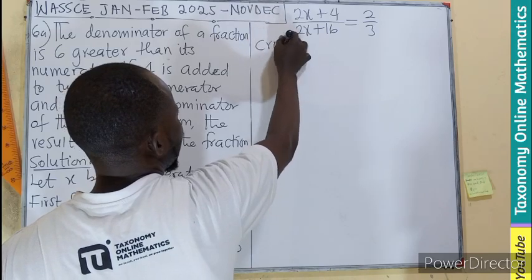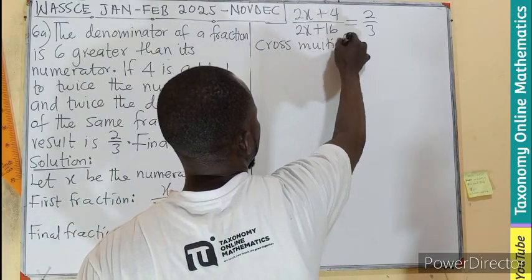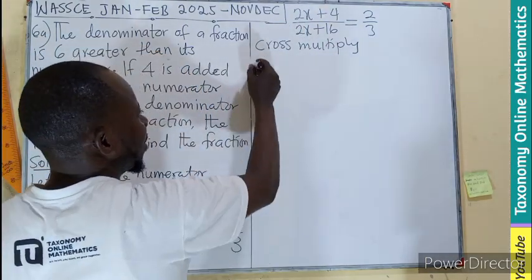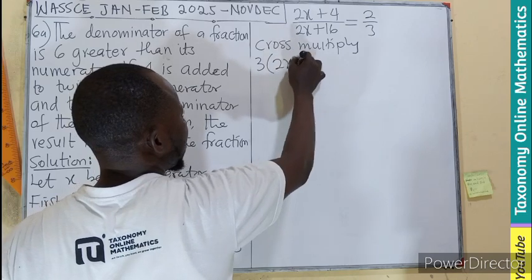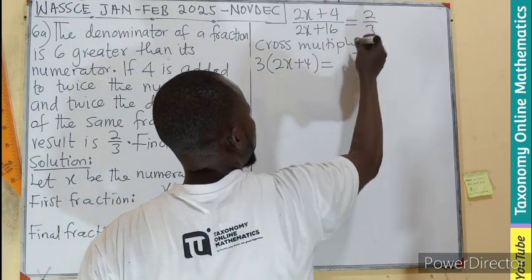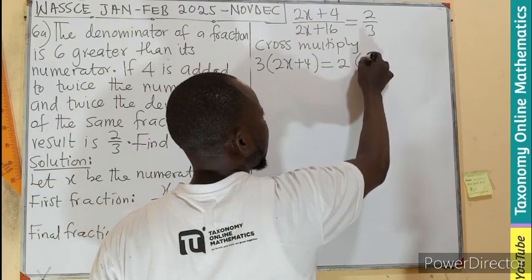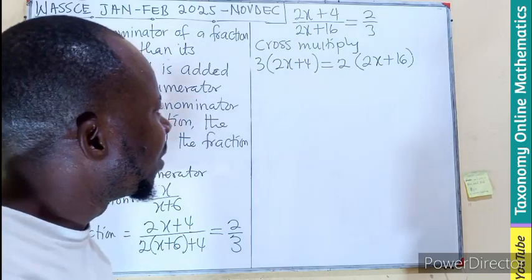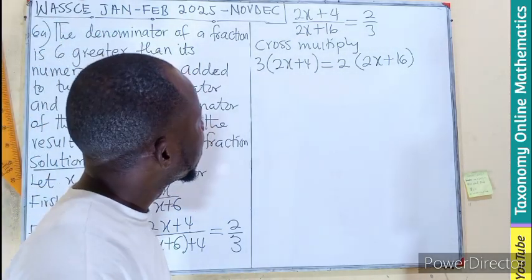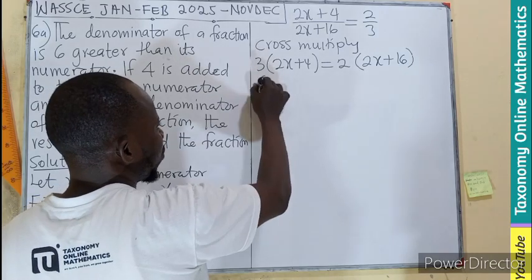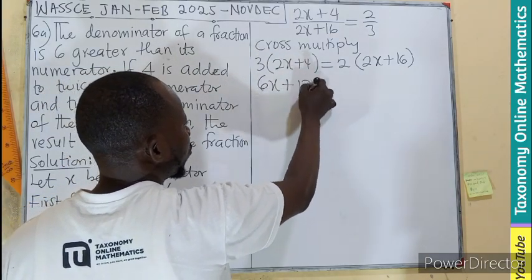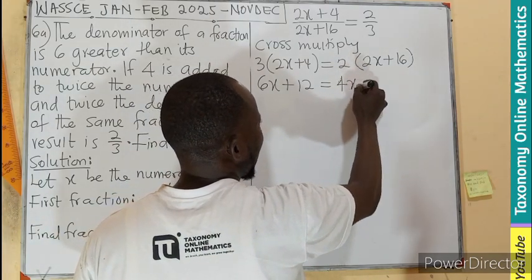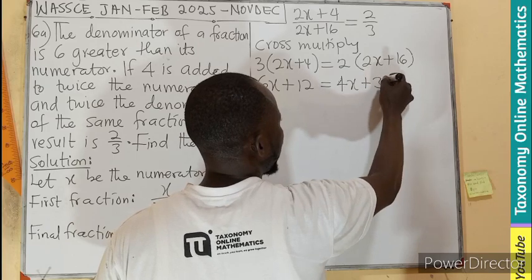We have only two terms in the denominator also. We can cross multiply. If you cross multiply, this 3 is multiplying the top part - 3 multiplying 2x plus 4, and this 2 also multiplying the down part on the left, 2x plus 16. We need to expand the bracket to eliminate the bracket. 3 times 2x is 6x, 3 times 4 is 12. 2 times 2x is 4x, 2 times 16 should be 32.